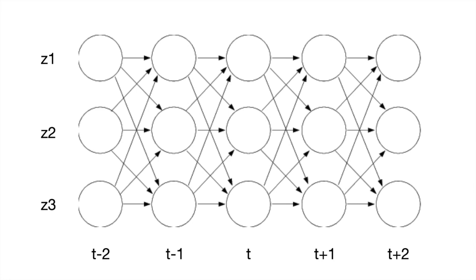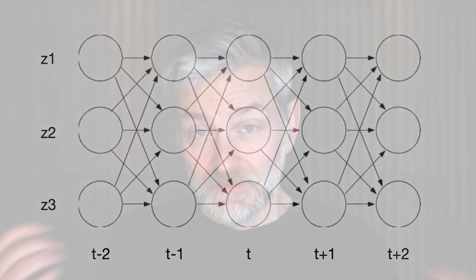In the trellis diagram, each column represents a particular time step, each node represents the state at that time step, and the routes through the sequence are represented by the arrows. Taking this into account gives us algorithms for solving all of the different kinds of problems we considered in relation to hidden Markov models.